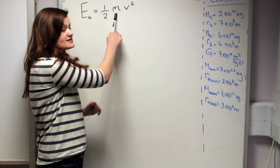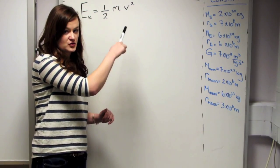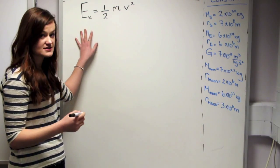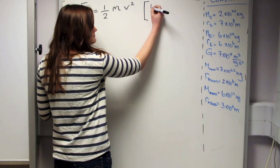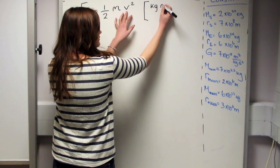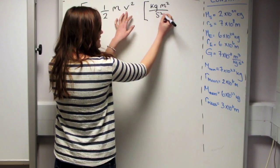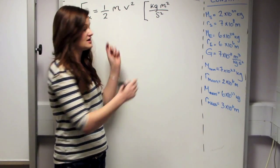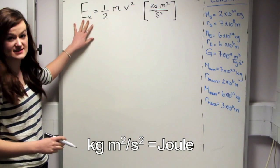So we're going to measure the mass of the ball in kilograms and the speed of the ball in meters per second, and that means that the units of energy are kilograms from the mass times meters squared divided by seconds squared from the speed squared. So that's the kinetic energy of the ball.